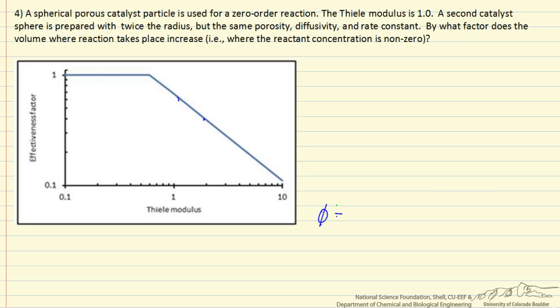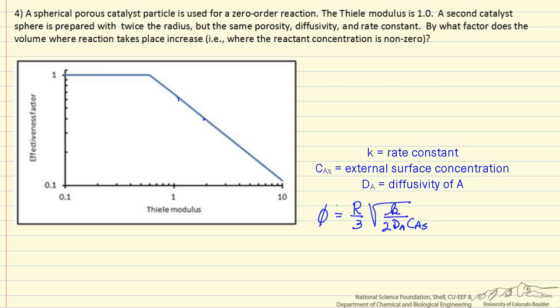The Thiele modulus for this plot is defined as the radius over 3 times the square root. This is the external surface concentration, and k is the rate constant.